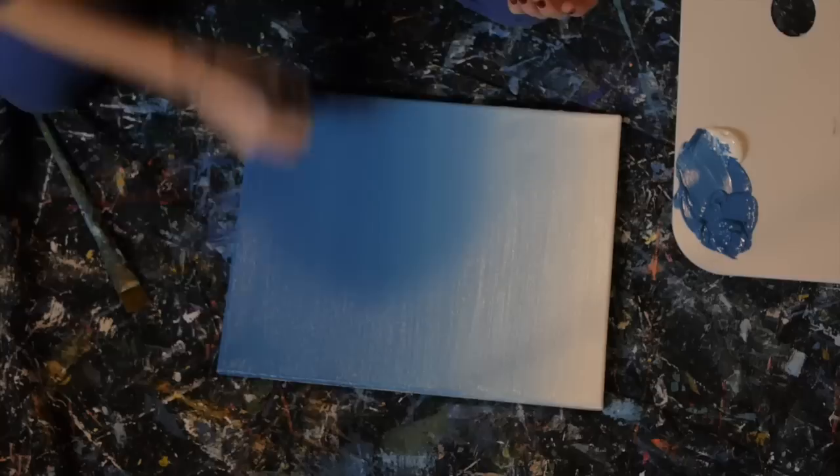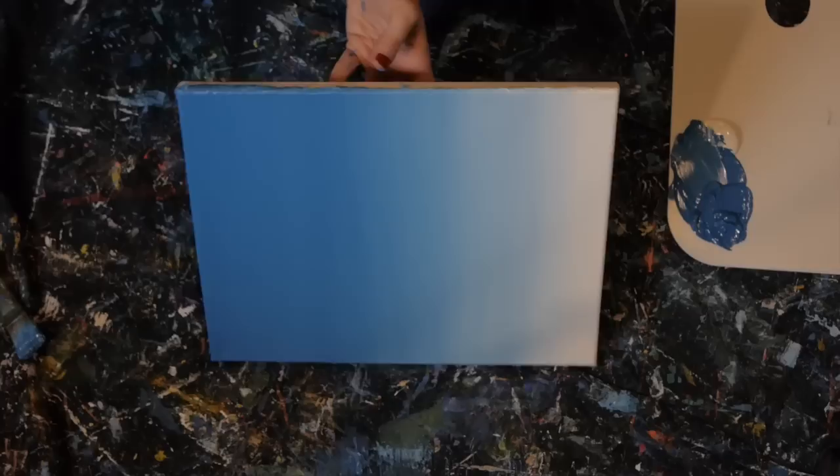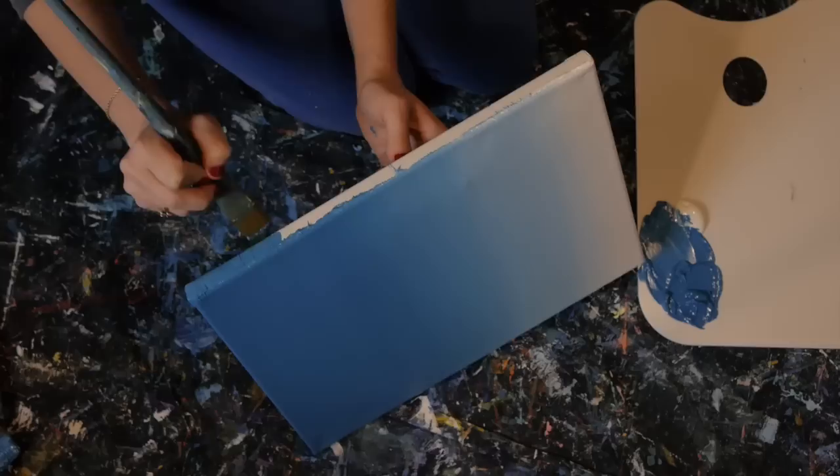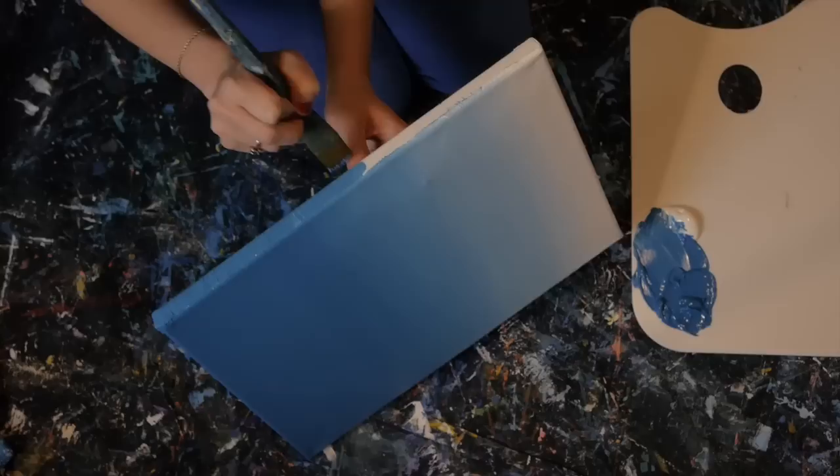Once you're blended really nicely, take your second paint brush. And this is why we painted the paint really thick. We're going to pull the paint from the sides, the excess paint down. Just like that.